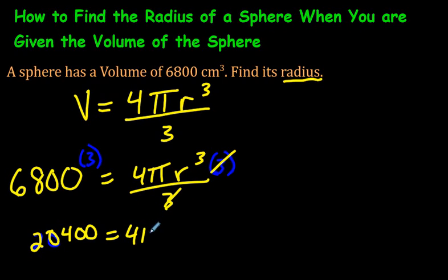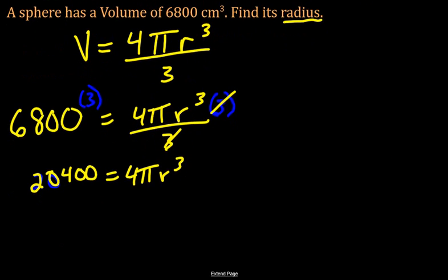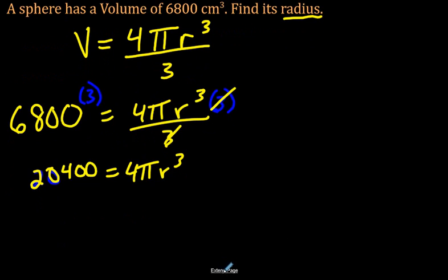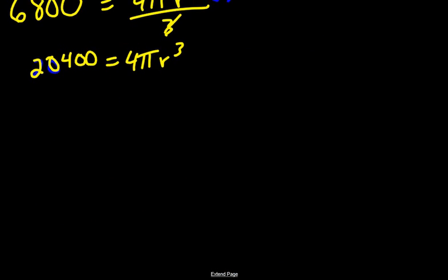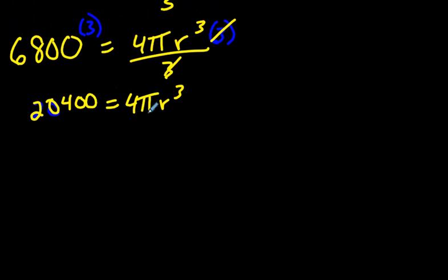And over here we have 4 pi r cubed. We're going to run out of space here. And then now we want to get rid of this 4 pi. We want r cubed all by itself. So we're going to divide both sides by 4 pi.